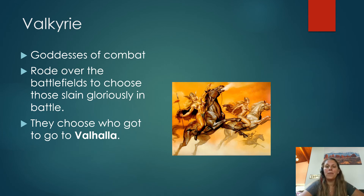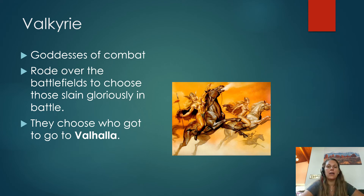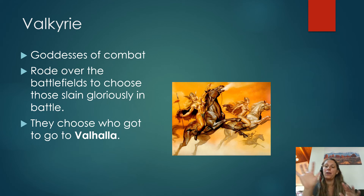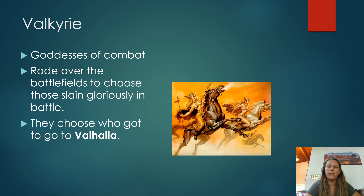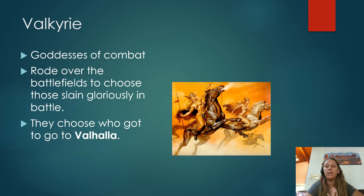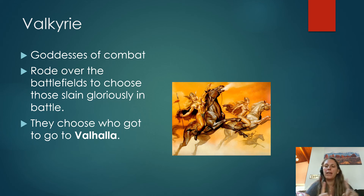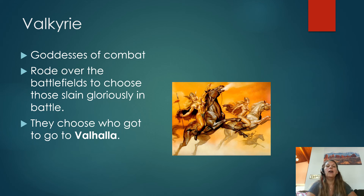The Valkyries are goddesses of combat, often depicted as very strong women who ride horses into battle. They would ride over the battlefield, see all those slain gloriously in battle, choose them, and send them to Valhalla. Also worth noting about Freyja: she gets half of everybody who dies gloriously in battle — half go to Odin and half go to her. This is another reason scholars think Freyja and Frigg may stem from the same goddess, since Frigg is married to Odin and it would make sense she'd get half the warriors.